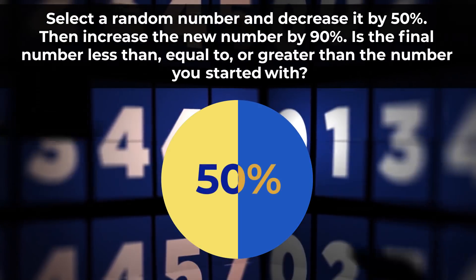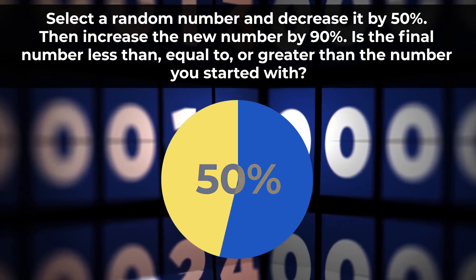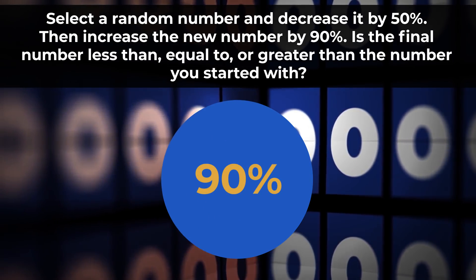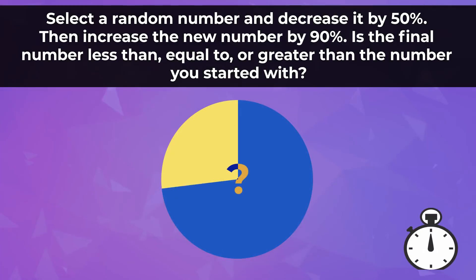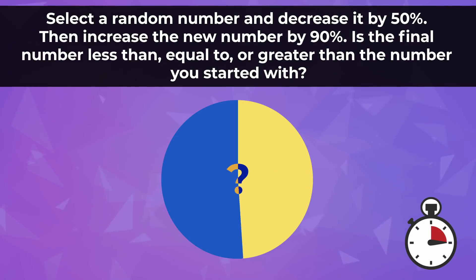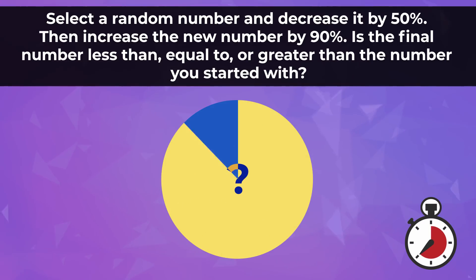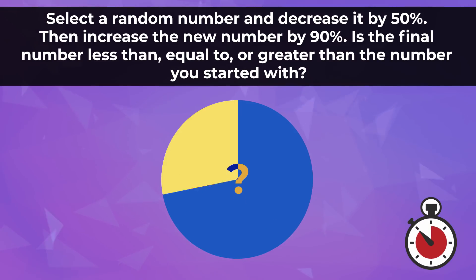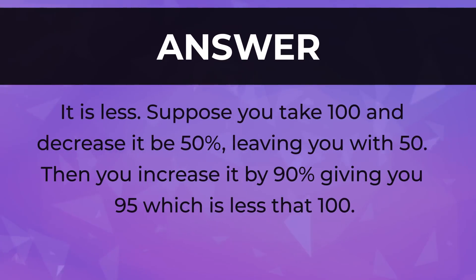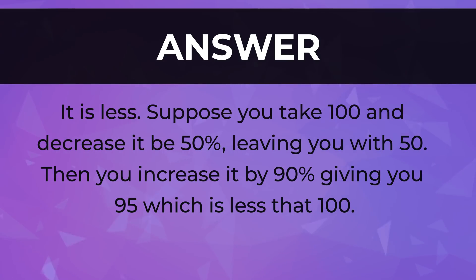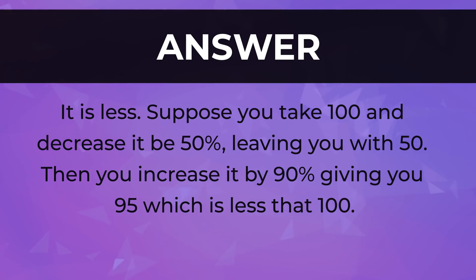Select a random number and decrease it by 50 percent, then increase the new number by 90 percent. Is the final number less than, equal to, or greater than the number you started with? The answer is it is less. Suppose you take 100 and decrease it by 50 percent, leaving you with 50, then you increase it by 90, giving you 95, which is less than 100.